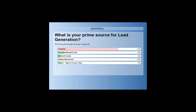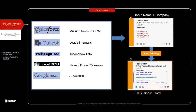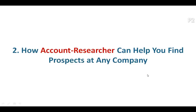In case LinkedIn is just one of your sources and you have other sources out there, no matter where your source is from — if you have your leads in an Excel file — you can take your name and company, put it inside the Account Researcher tool. This is not a LinkedIn-only tool; you can work on it anywhere. You just need the name and company, press a button, and it finds the whole business card.